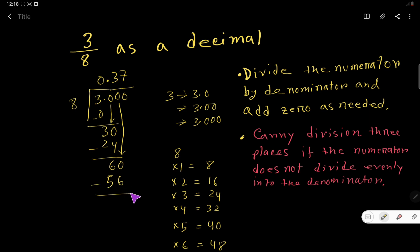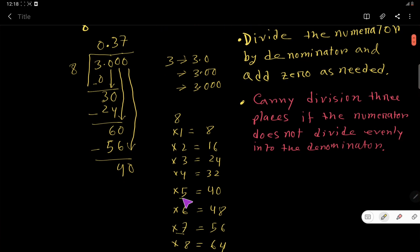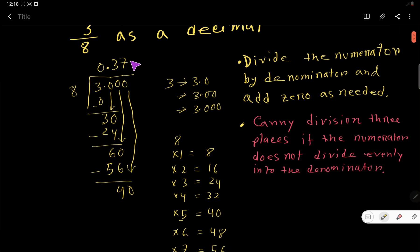We get 4. Bring down this 0. 8 goes into 40 how many times? 5 times. 8 times 5 equals 40, so we write 5. If you subtract, you get 0. You continue the division process until the subtraction equals 0.